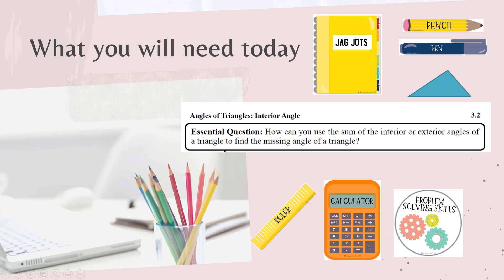Today you'll need your Jaguar Jots, a pen or pencil. Your Jaguar Jots should be on 3.2. You'll need a ruler to make a triangle on a piece of paper. You might need your calculator and your problem solving skills along with a good growth mindset.